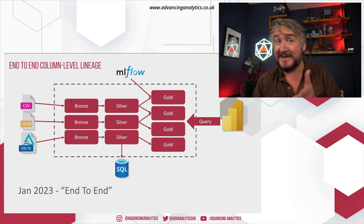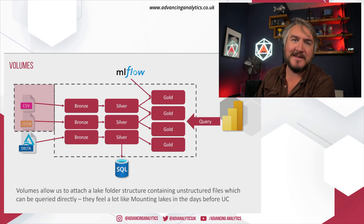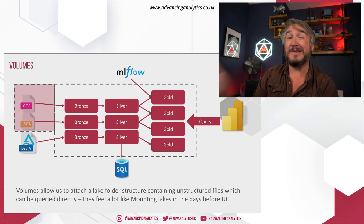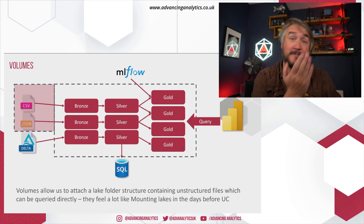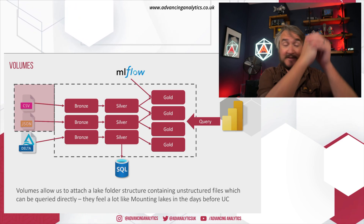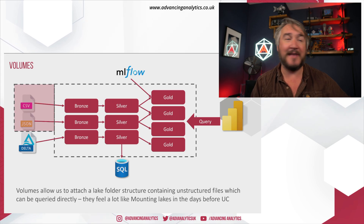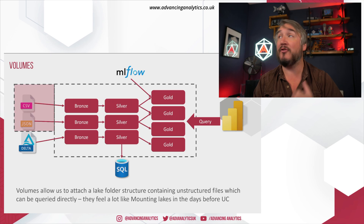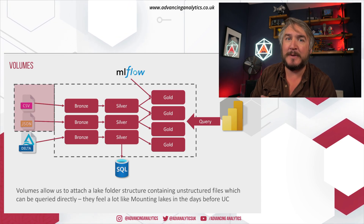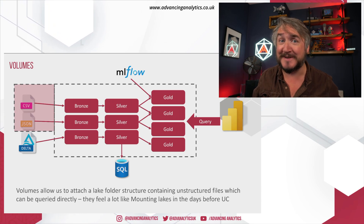Number one: Volumes. Super simple. Back in the day, we'd mount a lake onto a Databricks workspace and explore all the files and folders in there. With Unity Catalog being very focused on delta tables and structured data, that story kind of fell apart. Volumes come in to fix that problem — essentially saying, as part of my catalog, there is just an unstructured folder with a bunch of files and subfolders. There shouldn't be any structured data in there; it's just data you're yet to put into a good format.